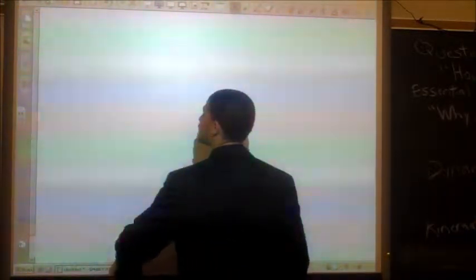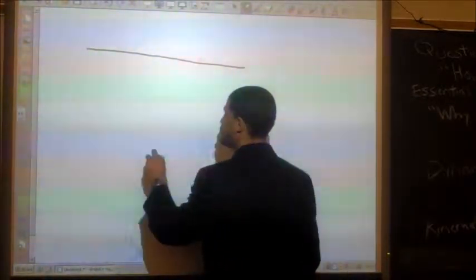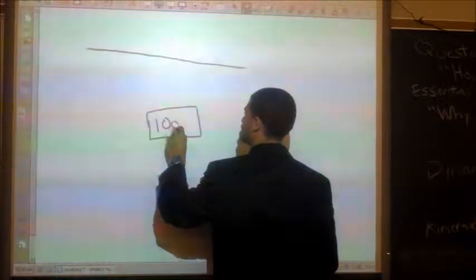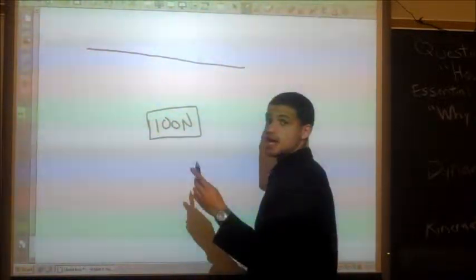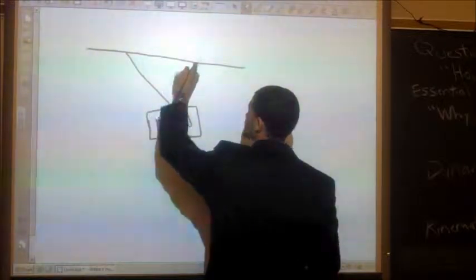And in this example, we have that same 100 newton mass, and this time we have two ropes on it that are hanging to a wall.